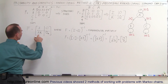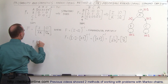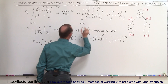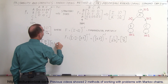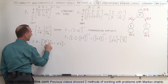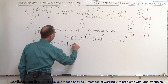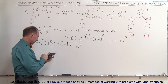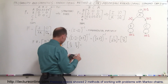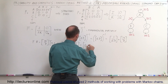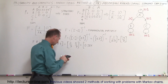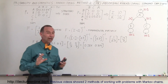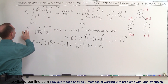Now we find F times R. F equals 10/7, and R is the matrix [0.2, 0.5]. Multiplying gives us 10×0.2/7 = 2/7 and 10×0.5/7 = 5/7. In decimal format, 2/7 ≈ 0.286 and 5/7 ≈ 0.714. That is the F times R matrix.